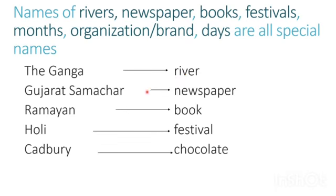Gujarat Samarchar is the name of a newspaper — so Gujarat Samarchar is the special name and newspaper is the common name. Ramayan is the name of a book — so Ramayan is the special name and book is the common name. Holi is the name of a festival — so Holi is a special name and festival is a common name. Cadbury is a chocolate brand — so Cadbury is a special name and chocolate is the common name.